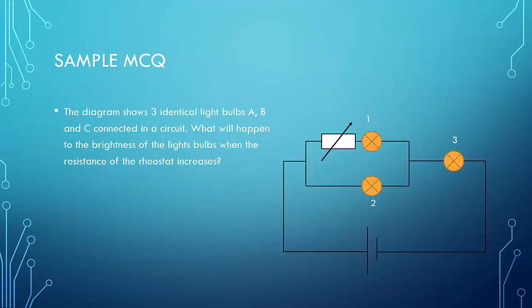So this is a sample question. The diagram shows three identical bulbs, 1, 2, and 3, connected in a circuit. What will happen to the brightness of the light bulbs when the resistance of this rheostat changes or increases? These are choices A, B, C, D.